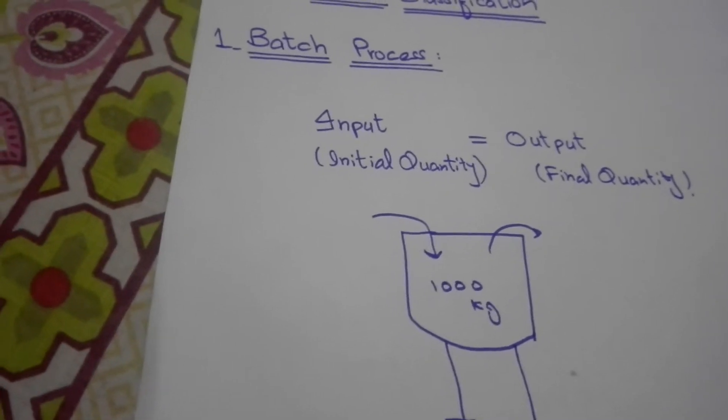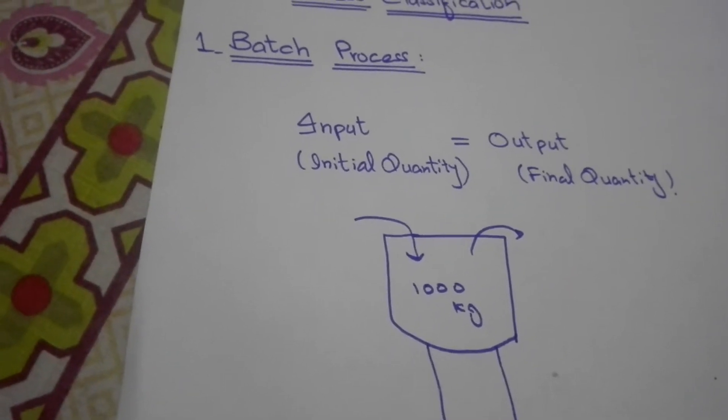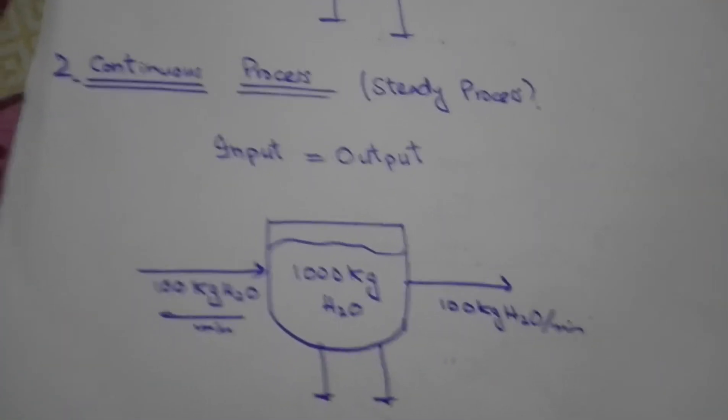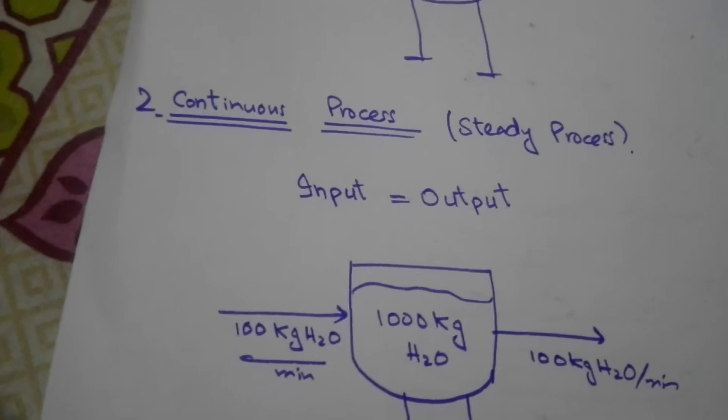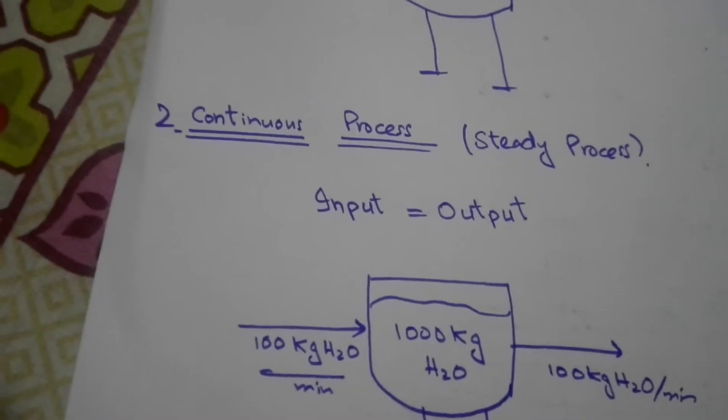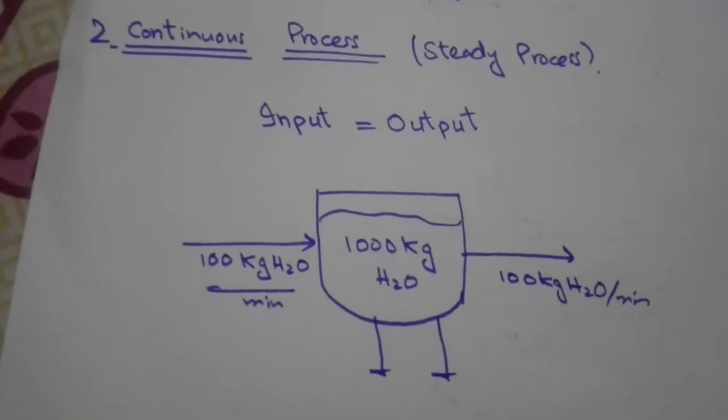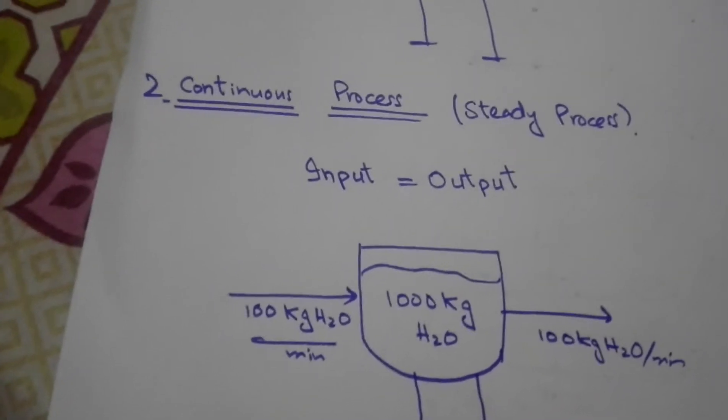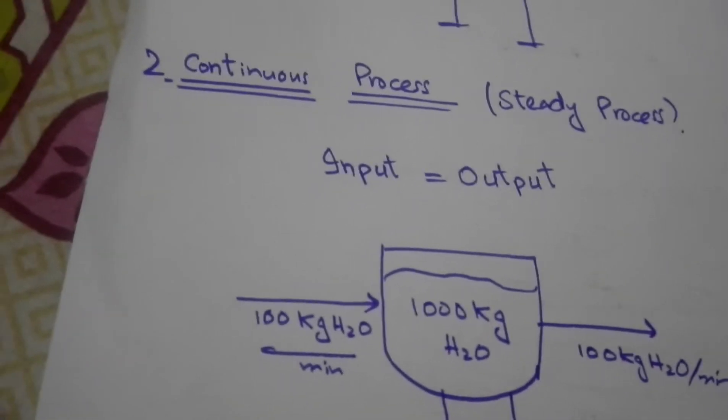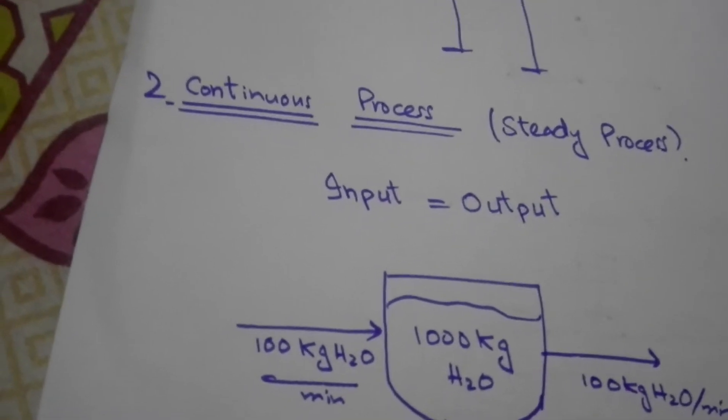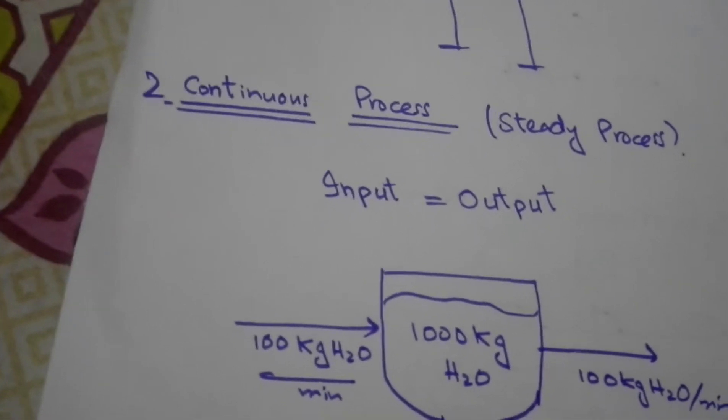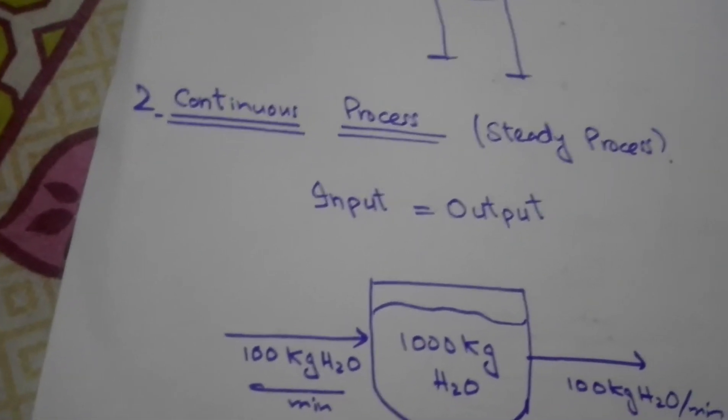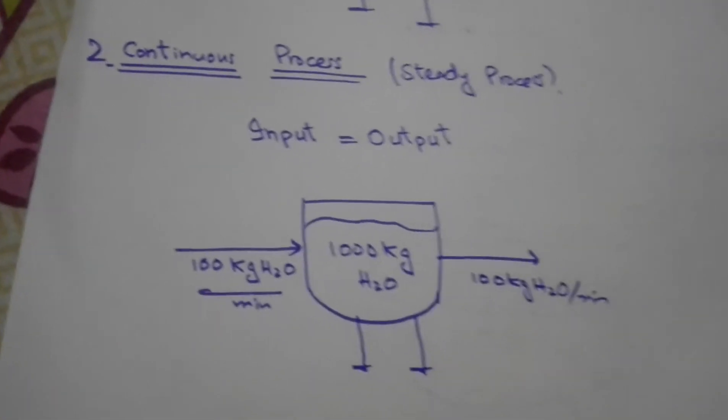The next one is continuous process, we call it steady process. The input and output flow continuously throughout the duration of the process. For example, pump a mixture of liquid into a distillation column at a constant rate, and steadily withdraw product streams from the top and bottom of the column.